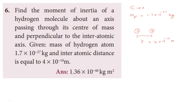About the axis, we calculate moment of inertia. The axis passes through the center and is perpendicular to the line joining the two atoms. The moment of inertia of a particle is MR². Here M is the mass of the particle, and R is the distance of the particle from the axis of rotation.